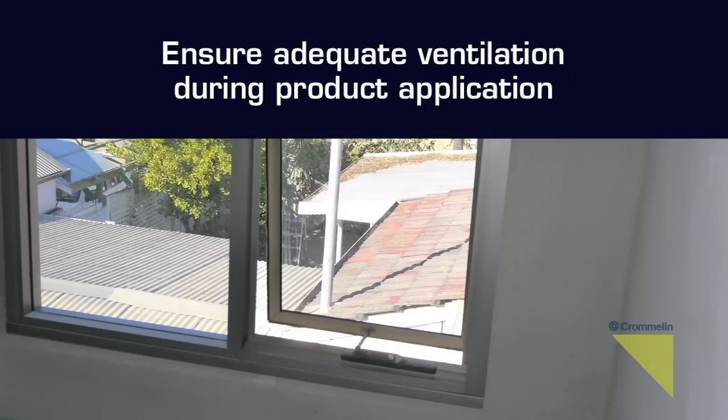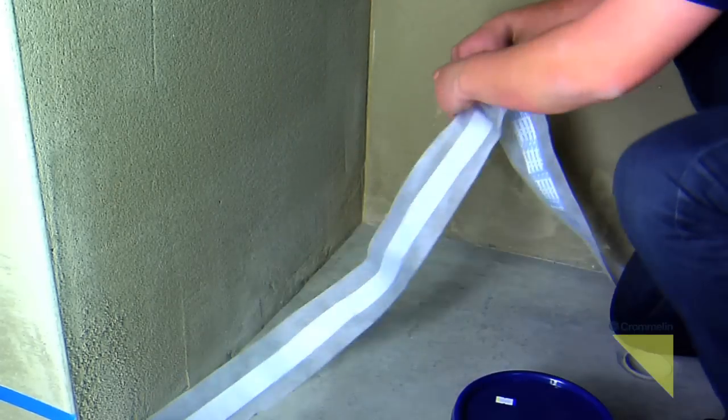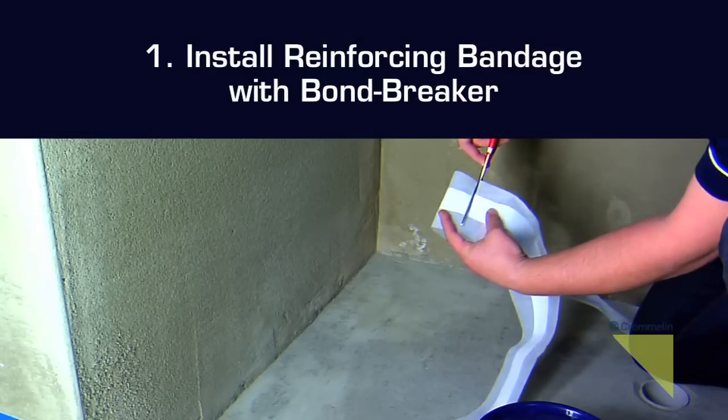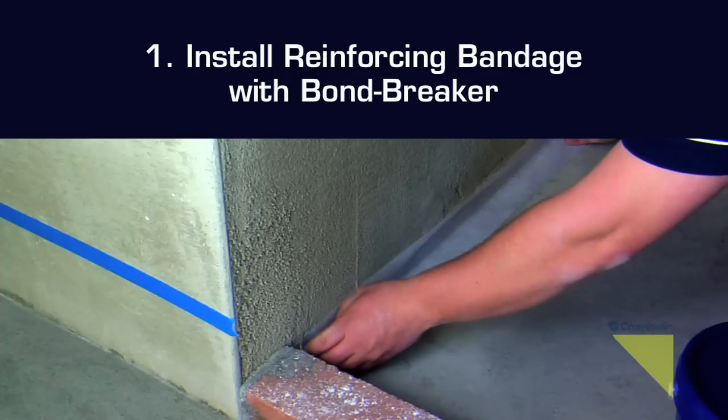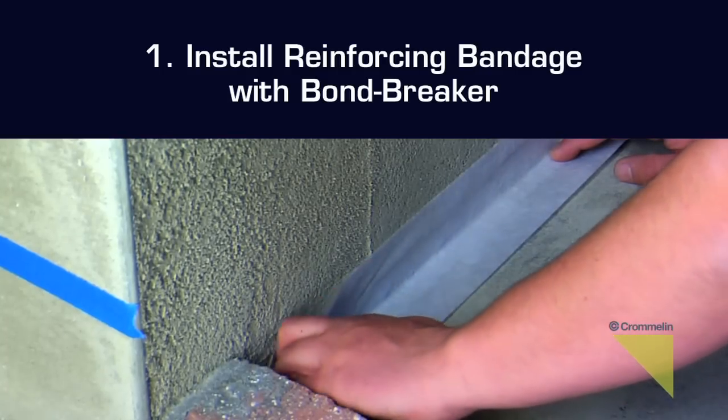When waterproofing a shower, there are four steps to be followed. Step 1: Install the bandage with bond breaker to all internal corners. Pre-cutting strips to fit will make installation easier.